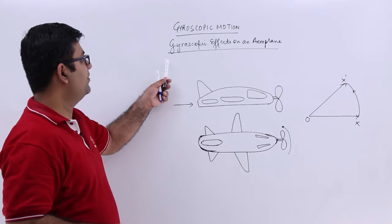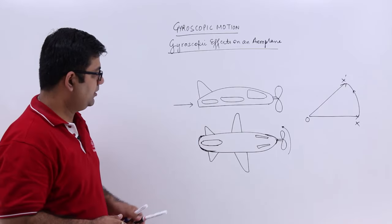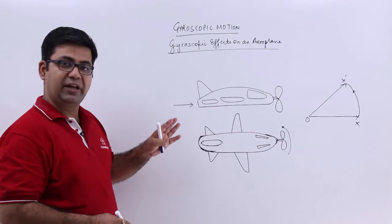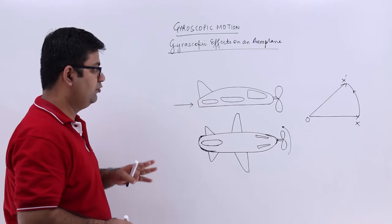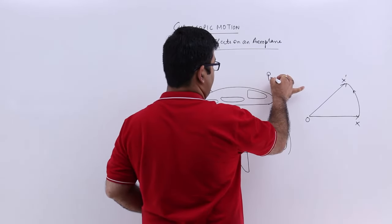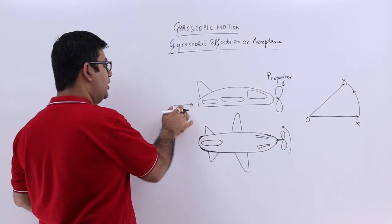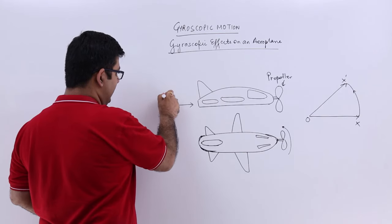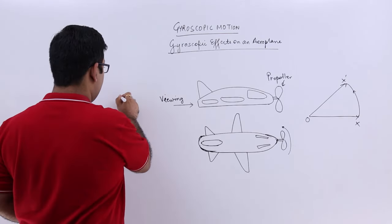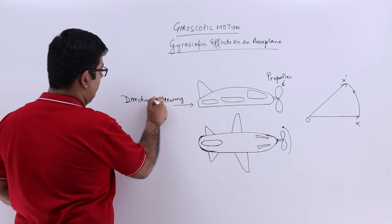Now let us understand the gyroscopic effects on an aeroplane. This is an aeroplane — this is the front view and this is the top view. The direction of viewing is very important. The propeller is at the front and this is the tail, and we are viewing it from the tail. So this is the direction of viewing.